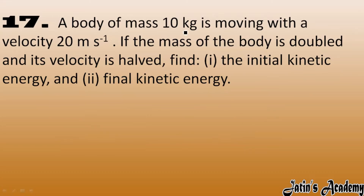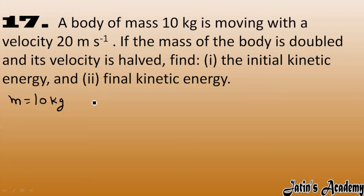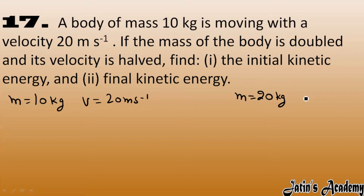A body of mass 10 kg is moving with the velocity 20 meter per second. If mass is doubled and velocity is halved, find the initial kinetic energy and final kinetic energy. In the first case: mass is 10 kg, velocity is 20 m/s. In the second case, mass is doubled to 20 kg, and velocity is halved — 20 divided by 2 — so 10 meter per second.